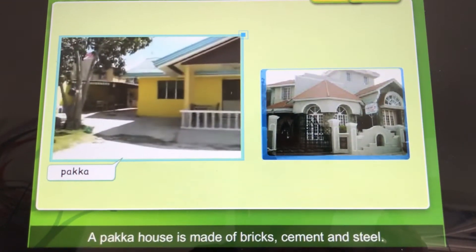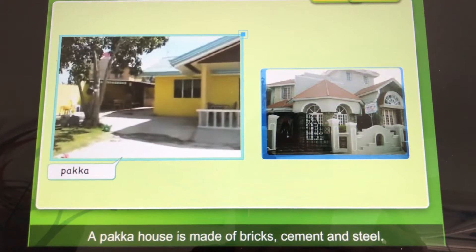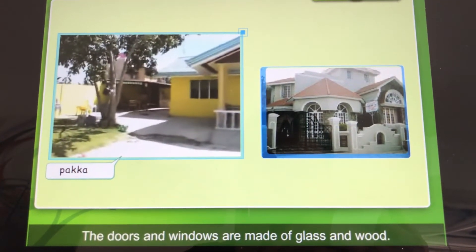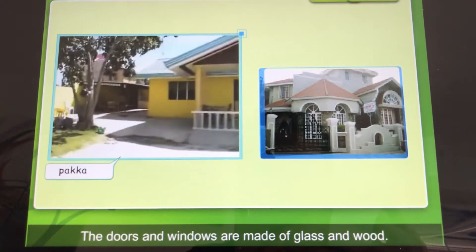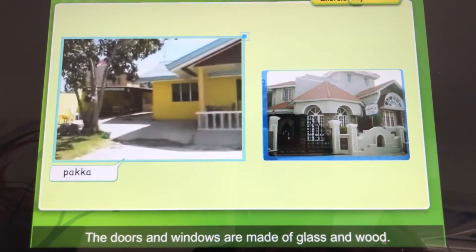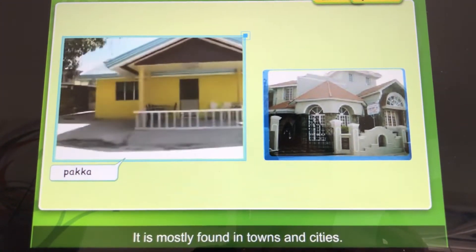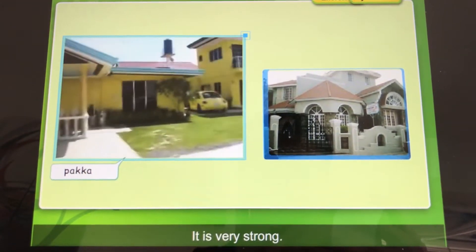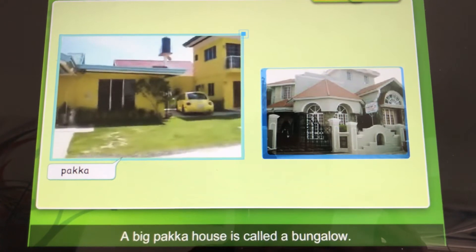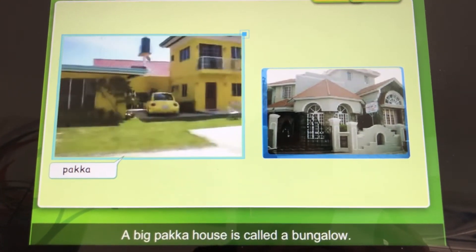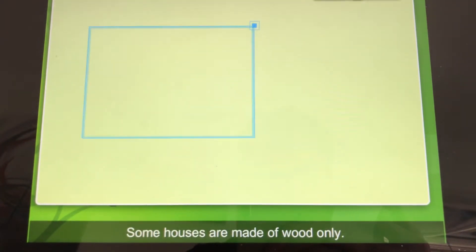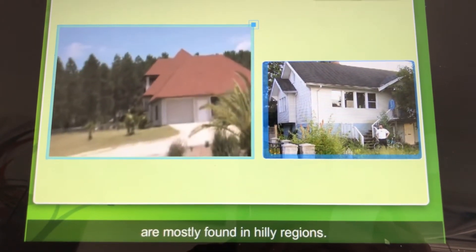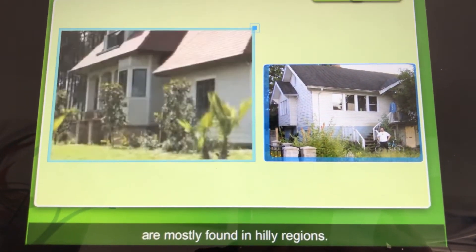A pucca house is made of bricks, cement and steel. The doors and windows are made of glass and wood. It is mostly found in towns and cities. It is very strong. A big pucca house is called a bungalow. Some houses are made of wood only, and they are mostly found in hilly regions.